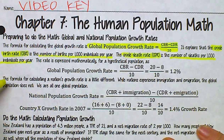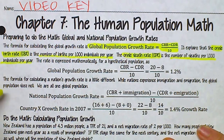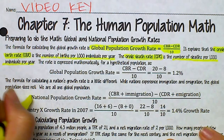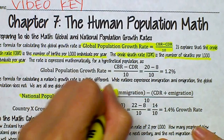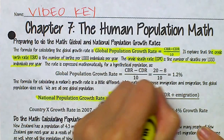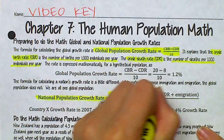The formula for calculating a nation's growth rate is a little different. While nations experience immigration and emigration, the global population does not. So our national population growth rate is: CBR plus immigration minus CDR plus emigration, divided by 10. Immigration and emigration are what separate the national population growth rate from the global population growth rate.